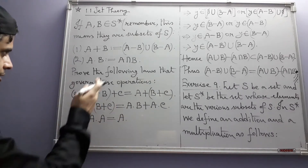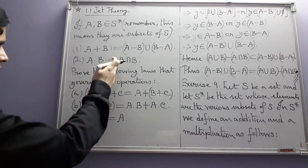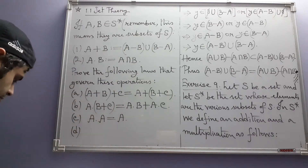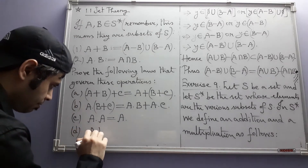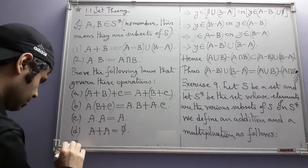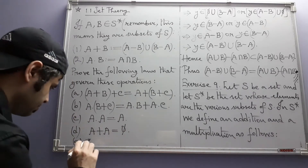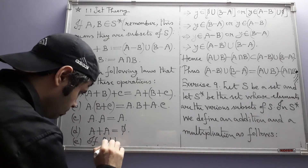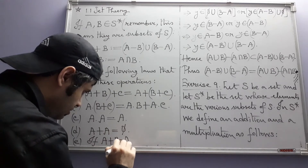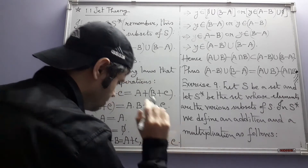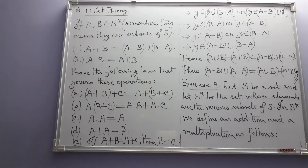Part C is almost easy — it just says that A intersection A equals A, which we already know. Part D: A plus A equals the empty set. And finally there is a cancellation law: if A plus B equals A plus C, then B equals C. We can cancel A from both sides.